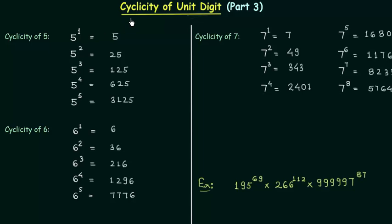We have already completed the cyclicity of 1, 2, 3, and 4. In this lecture we will complete cyclicity of 5, cyclicity of 6, and cyclicity of 7. We will start with cyclicity of 5.